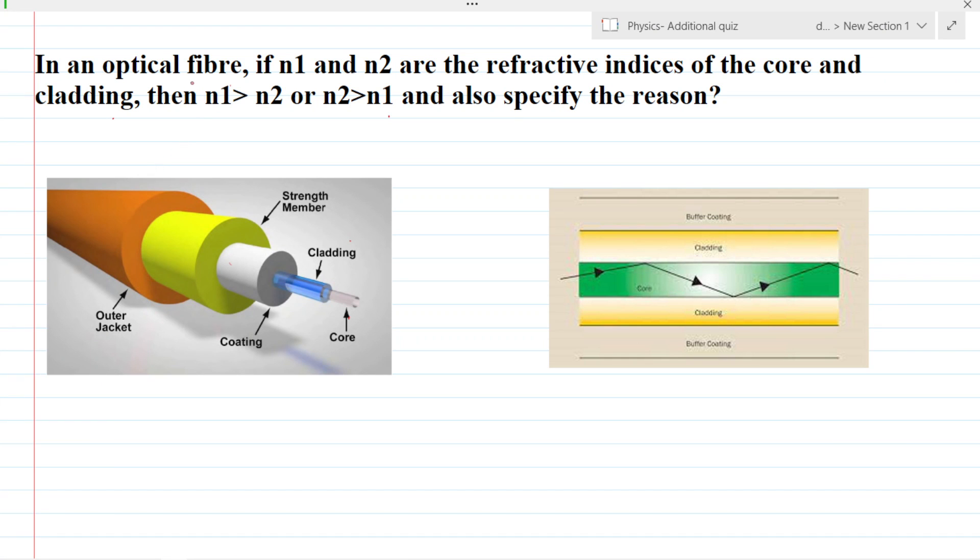Hello students, we have a question here. In an optical fiber, if n1 and n2 are the refractive indices of core and cladding, then n1 greater than n2 or n2 greater than n1? And also specify the reason.